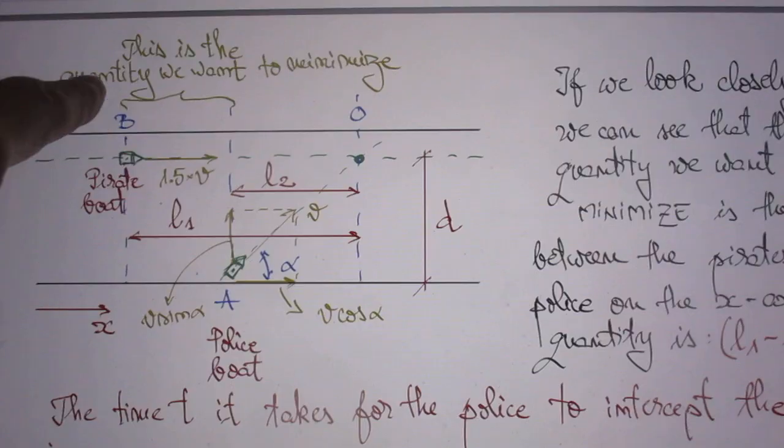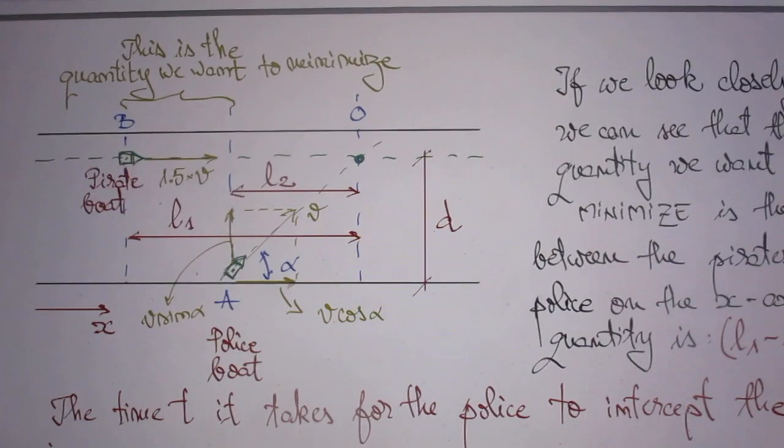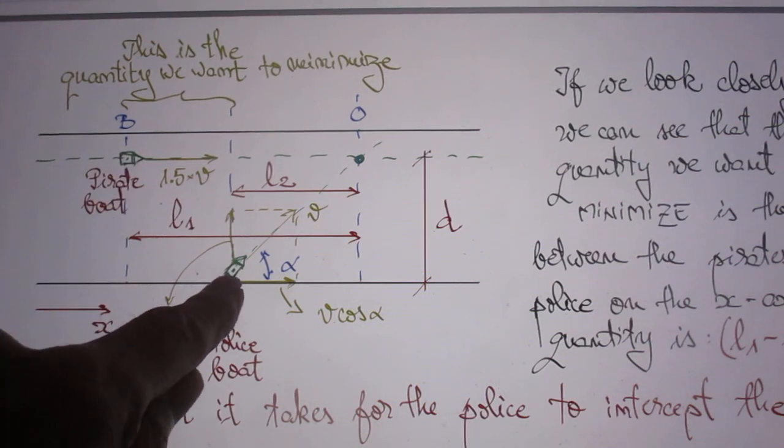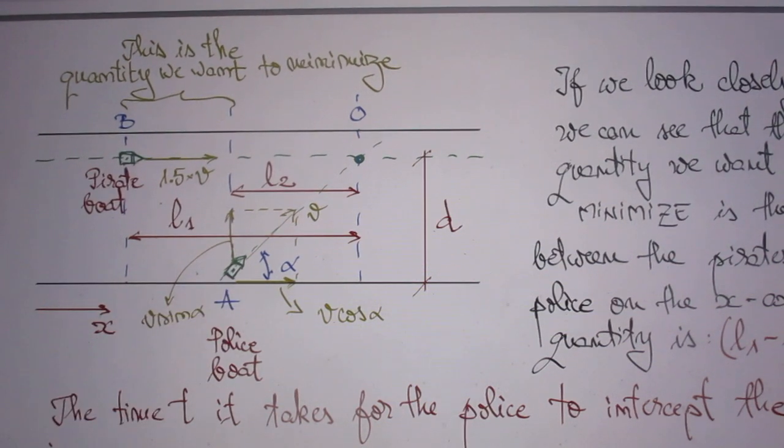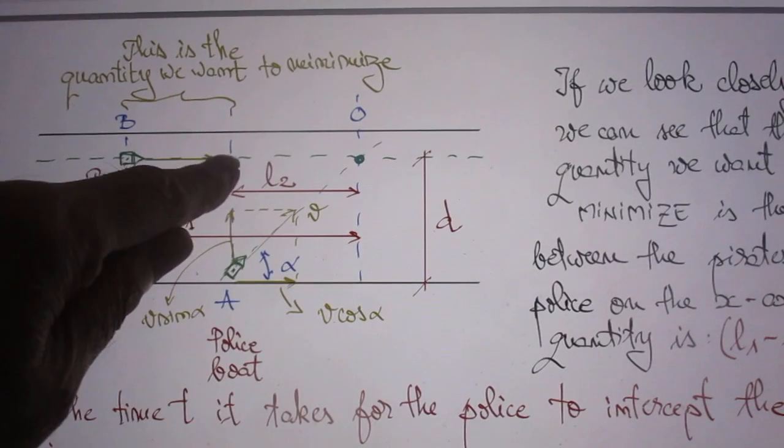Namely, the function alpha, F prime of alpha, has to be zero to find the minimum. This is the quantity that wants to minimize. From here to here, this is where the pirates are, and this is point A.